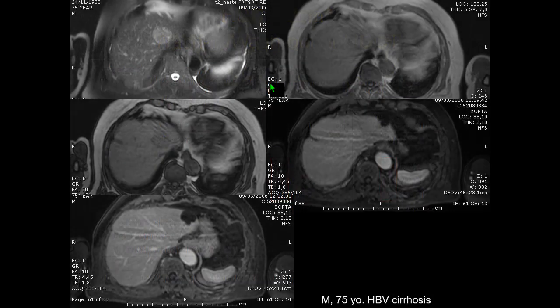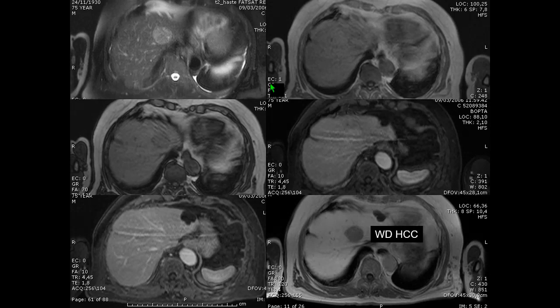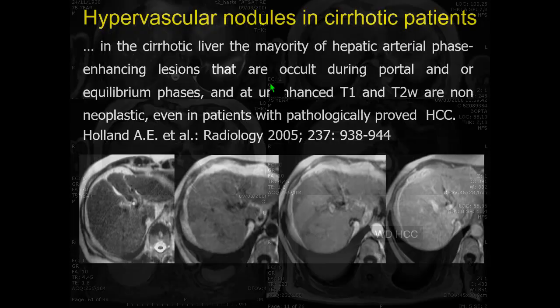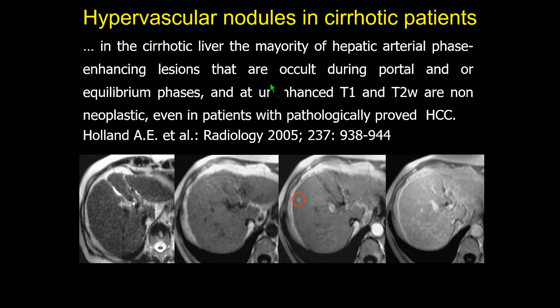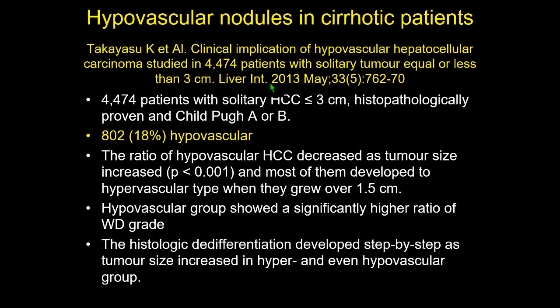When we don't see the wash-in or wash-out clearly, the hepatobiliary phase is crucial: we can see very clearly the lack of uptake. Remember that in cirrhotic patients, small hypervascular lesions not appreciated on T1 and T2 are in most cases benign — like small intrahepatic shunts — though they can appear as round lesions. Up to 18-20% of HCC are hypovascular, making dynamic imaging alone insufficient for correct diagnosis.